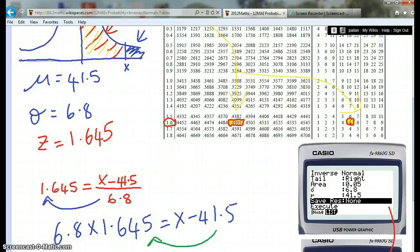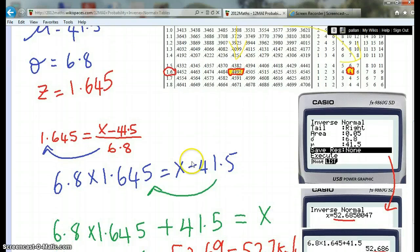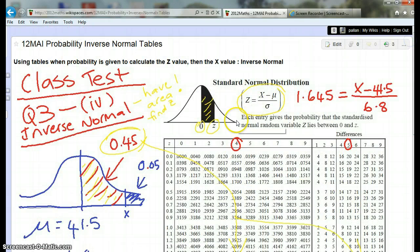Once we've got the Z value, we know that Z equals X minus the mean divided by the standard deviation. That formula comes from here. This is the X value, the non-standardized thing.